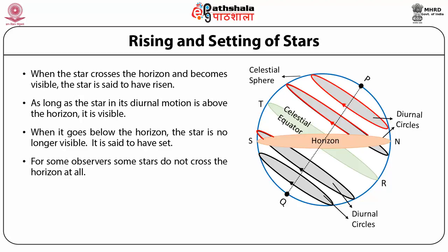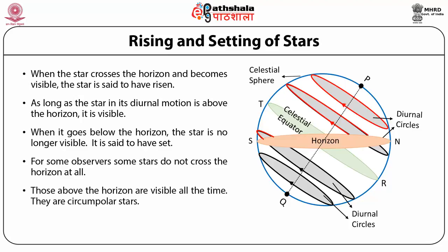For some observers, some stars do not cross the horizon at all — shown as complete circles in the picture. Those whose complete diurnal circles are above the horizon are visible all the time; they are called circumpolar stars because of their proximity to the pole. Those below the horizon are never visible. The diurnal circles of stars north of the celestial equator are more than half above the horizon, while stars south of it have less than half above the horizon — so northern stars are visible for longer durations.